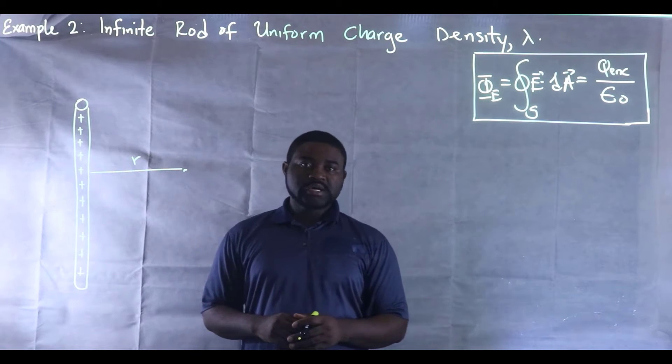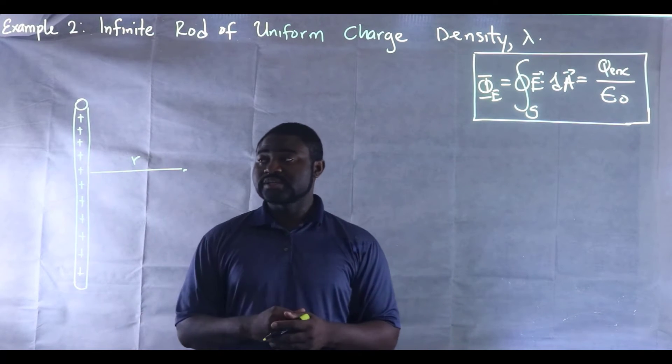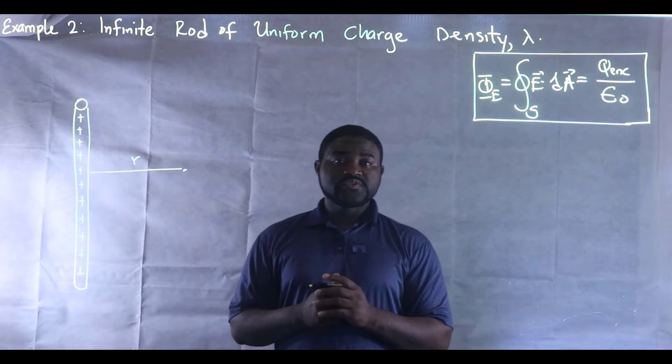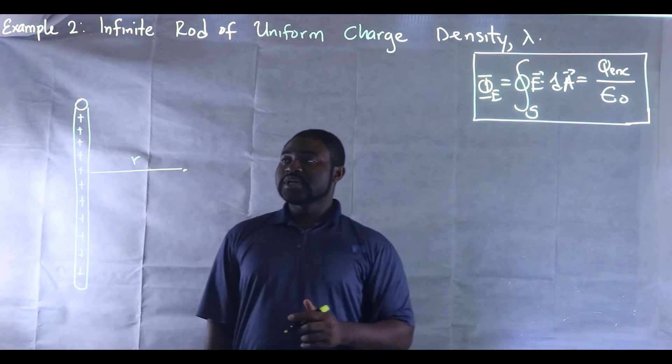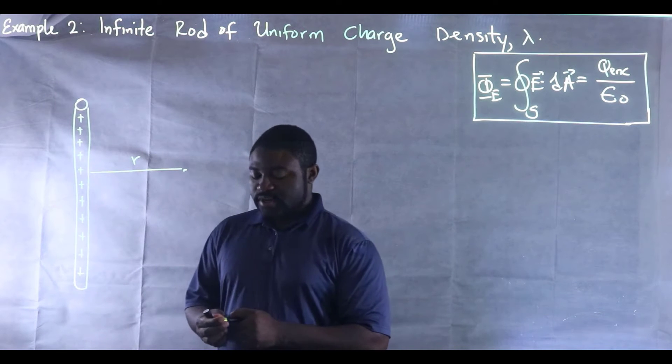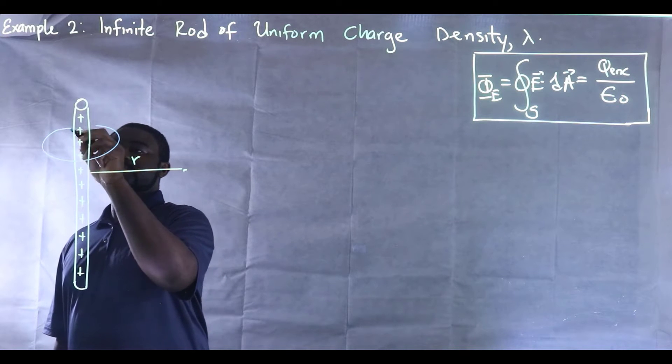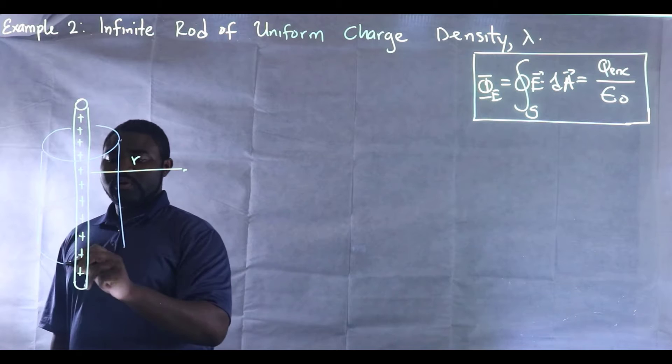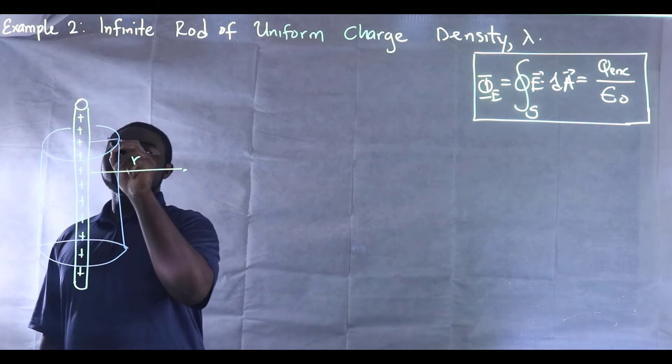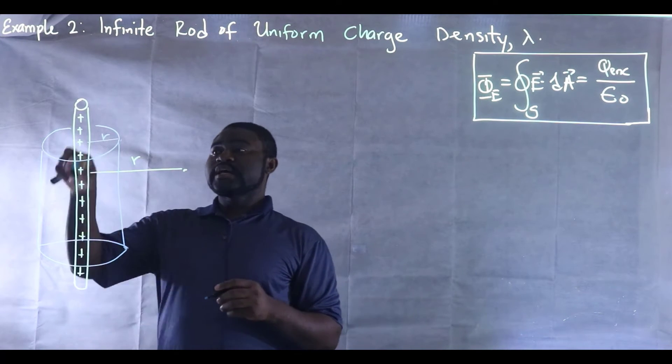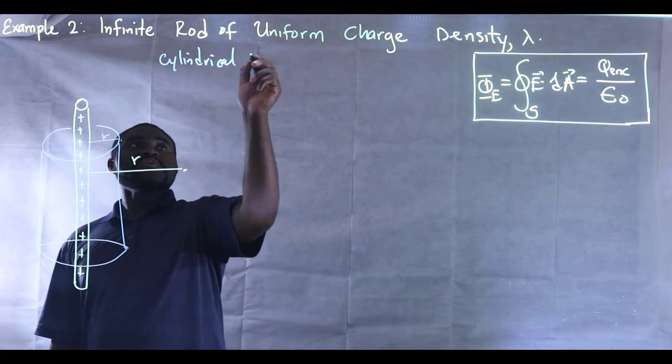So what are the exact steps that we need to follow in order for us to be able to accomplish this task? The very first step that you need to do is identify the symmetry of the problem. This is a charged rod. Looking at the problem carefully, we see that this rod can be enclosed by an imaginary cylinder of radius r. So this exhibits what we call cylindrical symmetry.